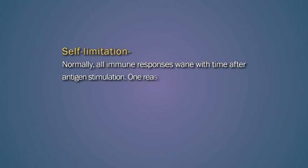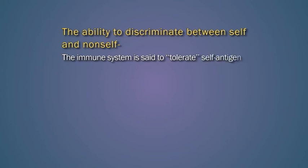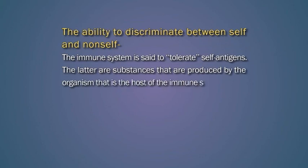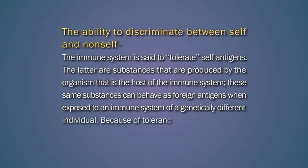The next feature is self-limitation. Normally, all immune responses wane with time after antigen stimulation. One reason is the successful elimination of the antigen that caused the response. The other reason is the existence of negative feedback mechanisms. The last feature is the ability to discriminate between self and non-self. The immune system is said to tolerate self-antigens, which are substances produced by the organism that is the host of the immune system. The same substances can behave as foreign antigens when exposed to an immune system of a genetically different individual. Because of tolerance of self, the host normally is not harmed by its own immune system.